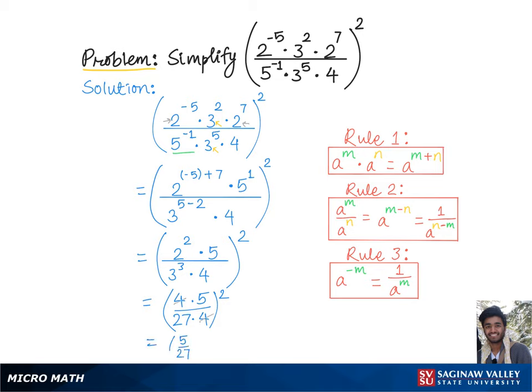This equals 5 squared is 25 over 27 squared is 729. Thus, the final answer is 25 over 729.